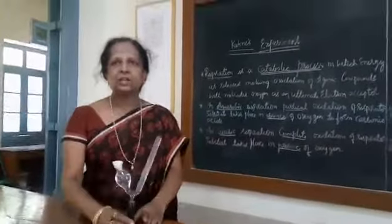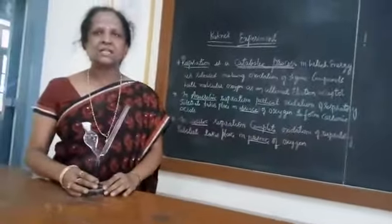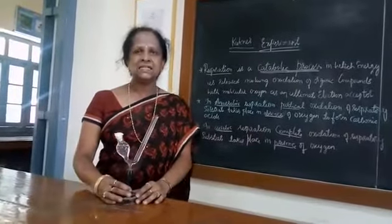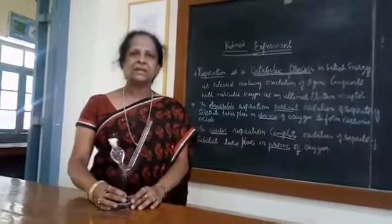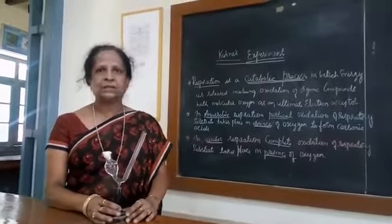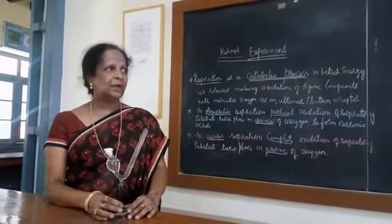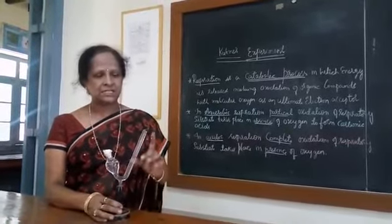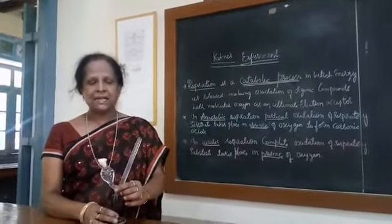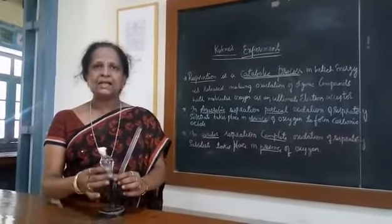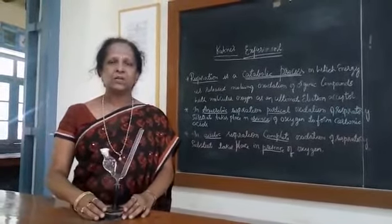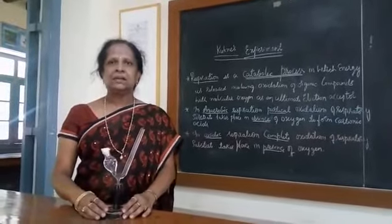This particular apparatus is named the Kohn's fermentation tube because it was designed by a scientist named Kohn. This apparatus consists of a vertical glass limb and a side bulb. The entire apparatus is mounted on a wooden stand.